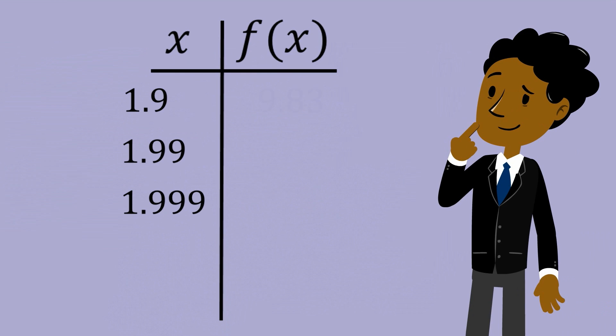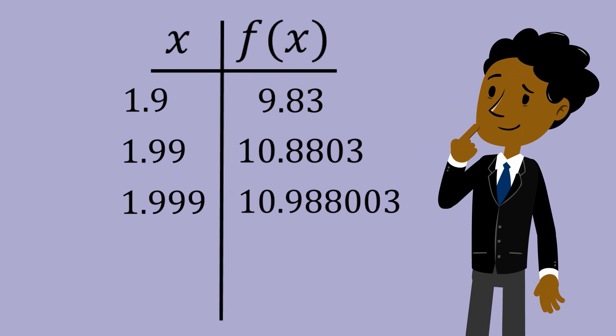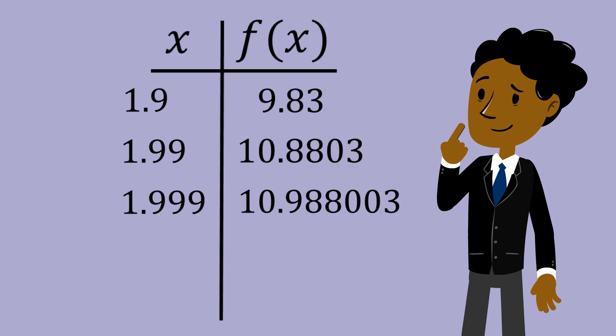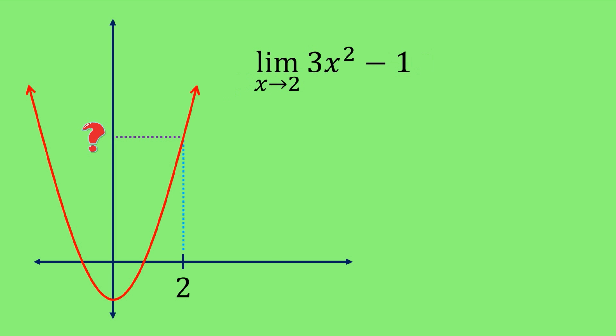When I use these, I get values such as 9.83, 10.8803, and 10.988003. From these values, it appears that the function is approaching 11. So we say that the limit of the function as x approaches 2 is 11.